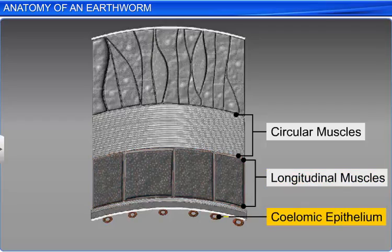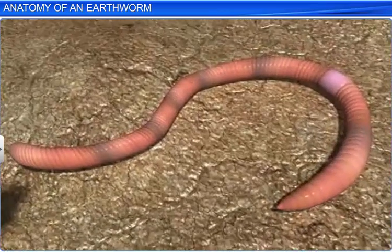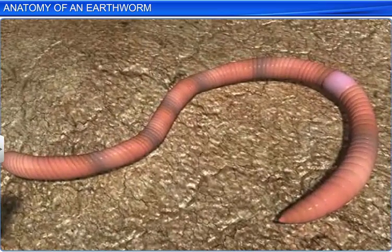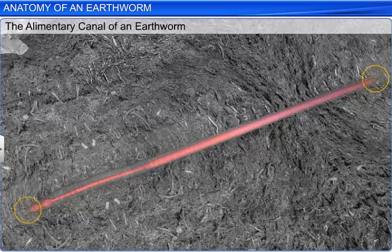Now let's take a look at the longitudinal section of the worm to study its remaining anatomical features. You'll notice a straight tube that runs from the first to the last segment of the body. This tube is the alimentary canal.